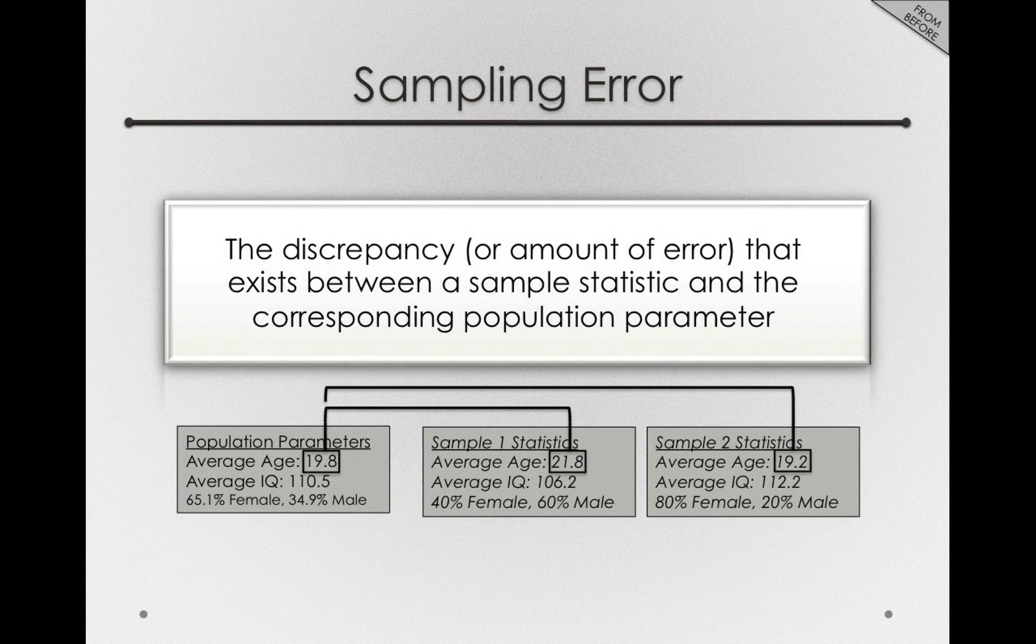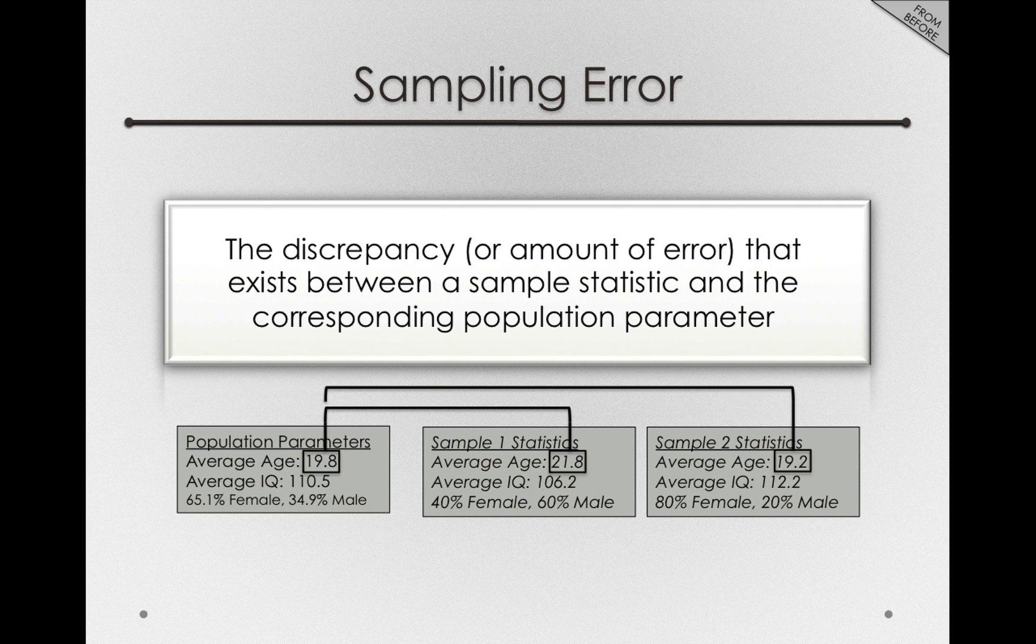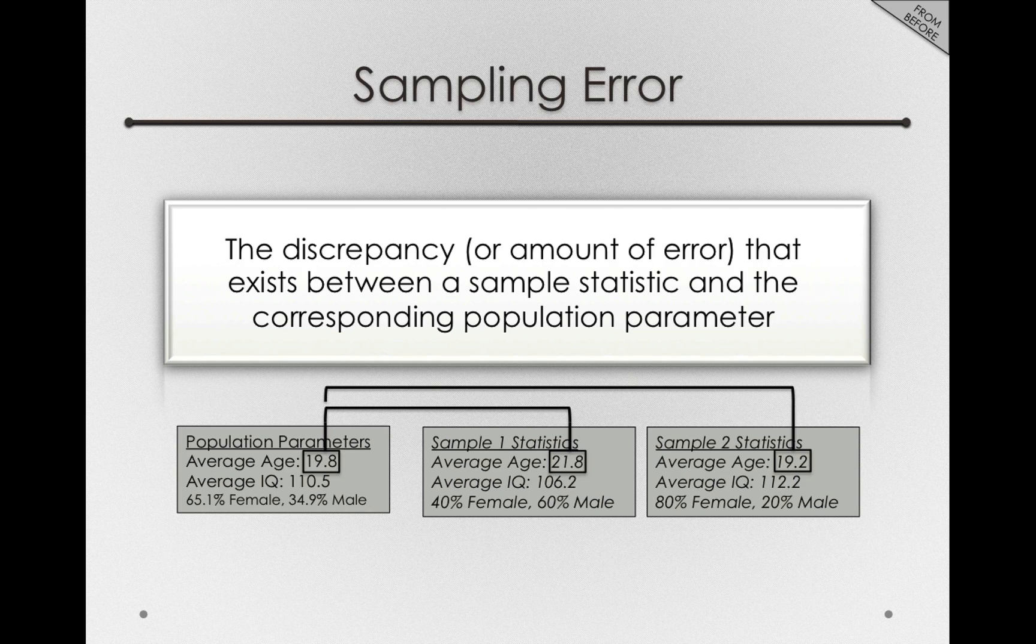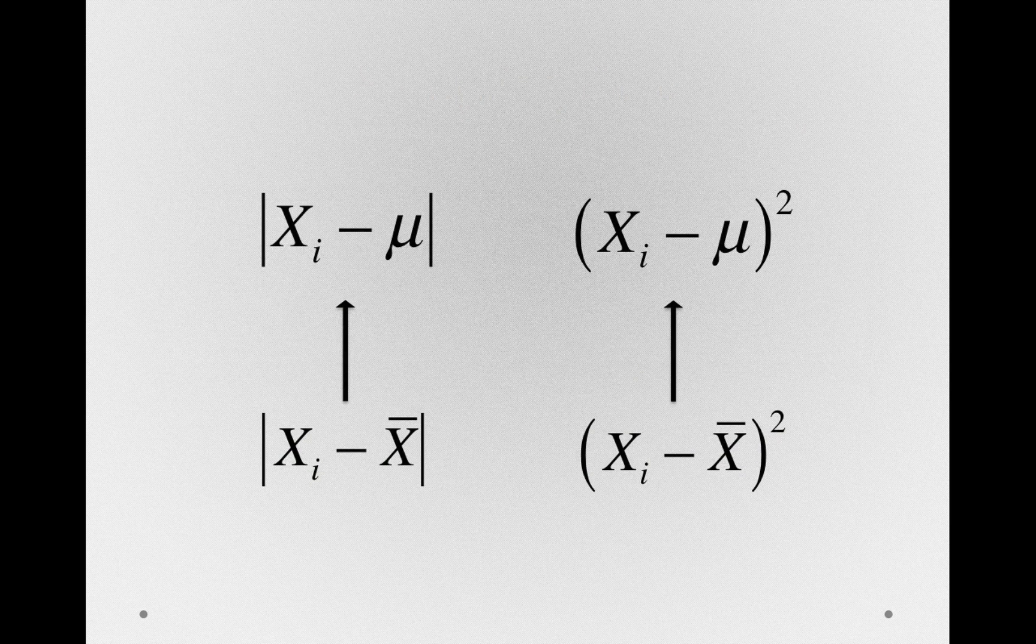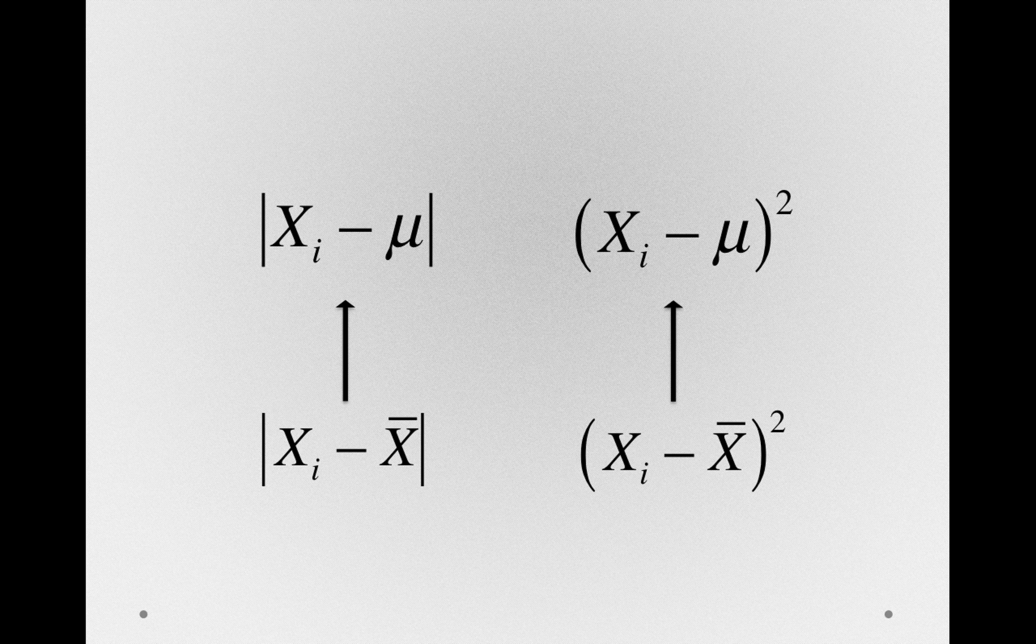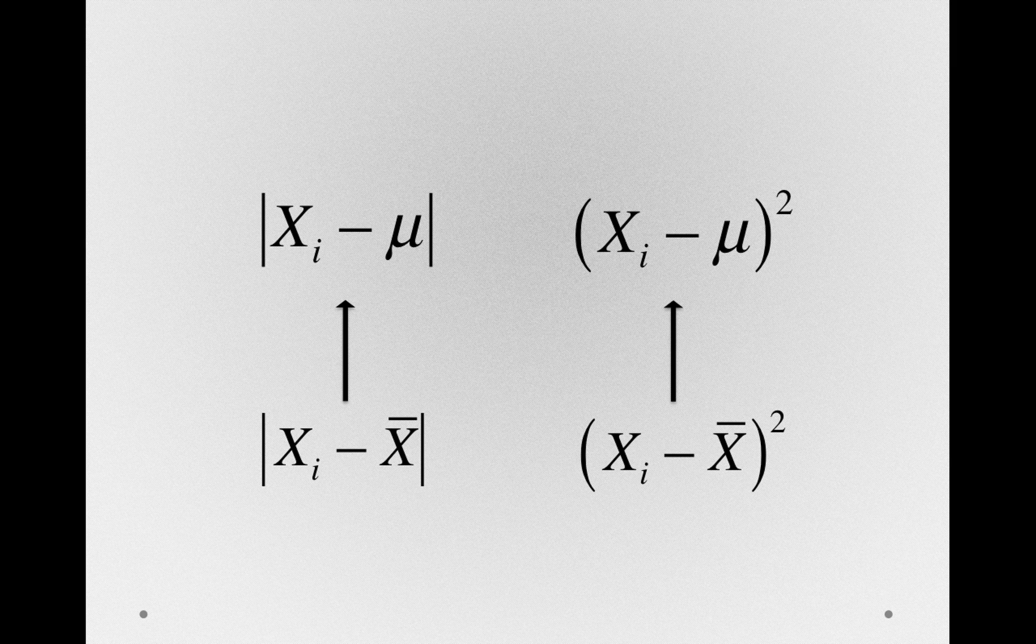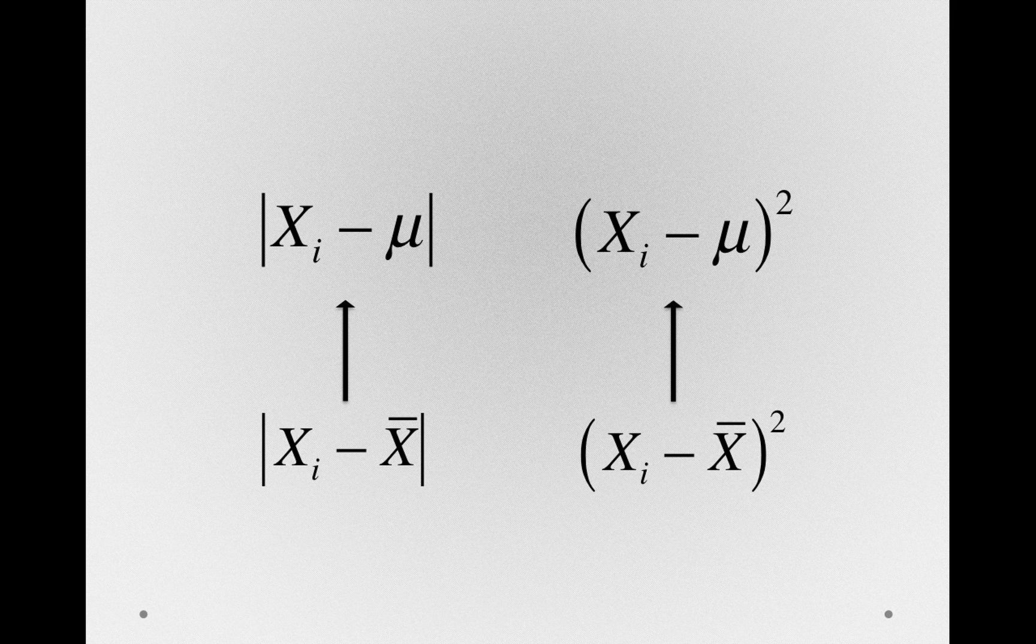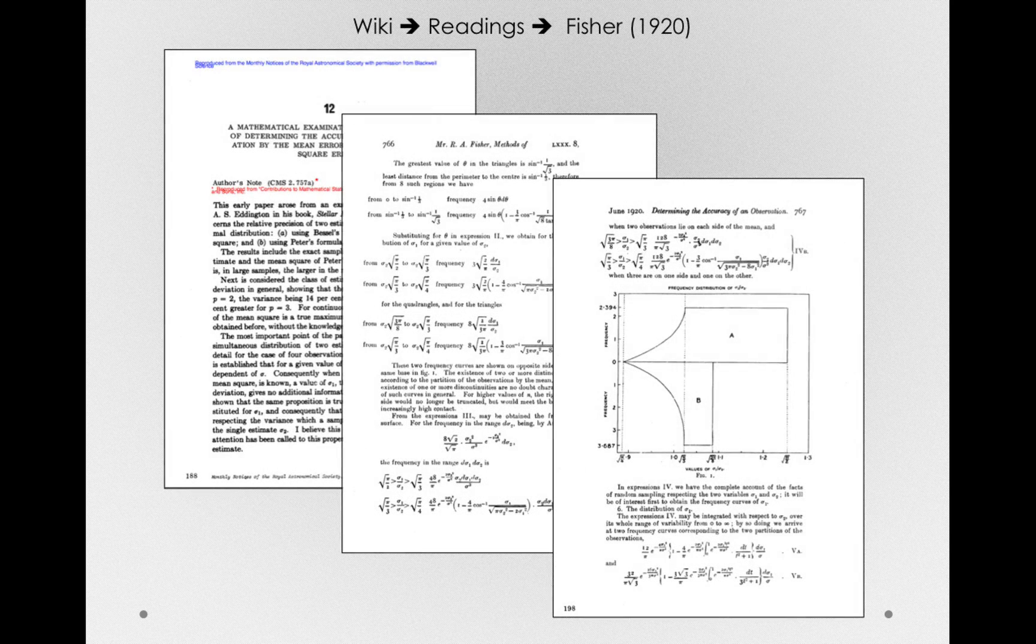Now remember, all statistics have sampling error, that discrepancy that will always exist between our sample statistic from our small sample and the true population parameter. And so in our sample, those x̄ will have error—we won't be taking deviations from a true value. What Fisher was able to show in his 1920 publication was that the squared deviation was actually a better estimate of the population squared deviation than using the absolute deviation.